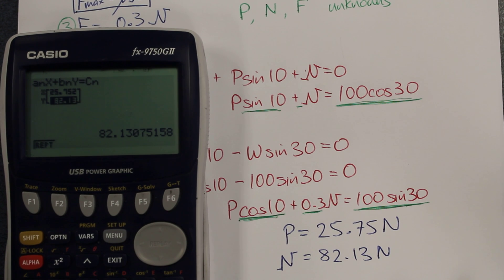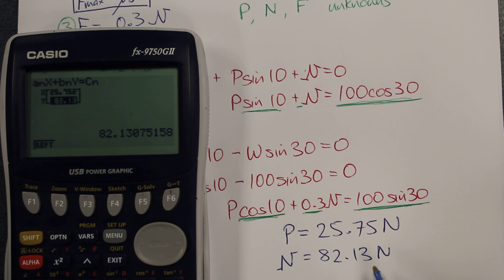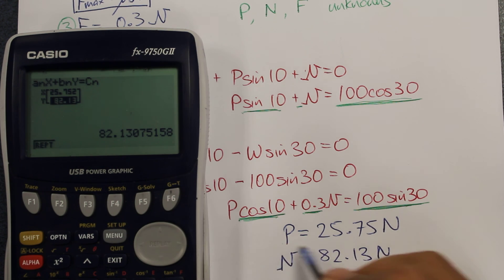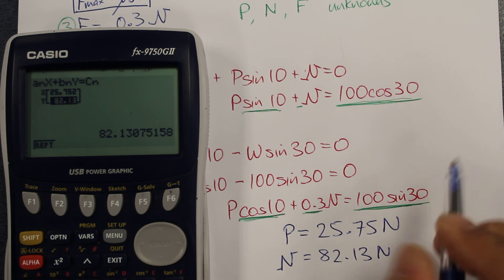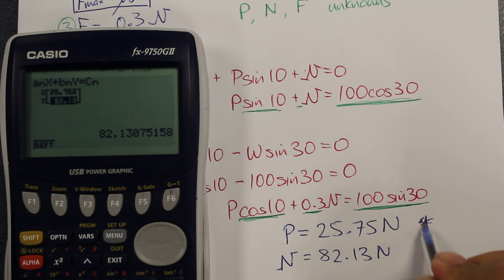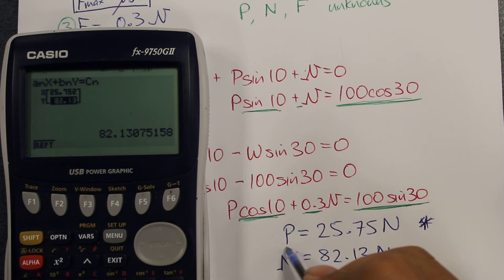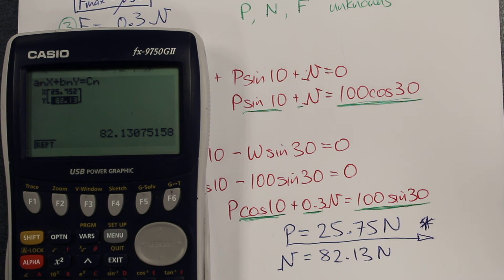So the solution to part A of our question is that the force P required to just hold the block from sliding down the plane is P equals 25.75 Newtons. Awesome, thank you guys, I'll see you in the next video. Bye-bye.